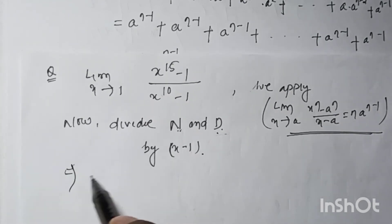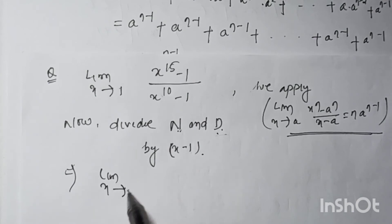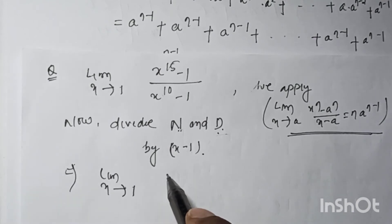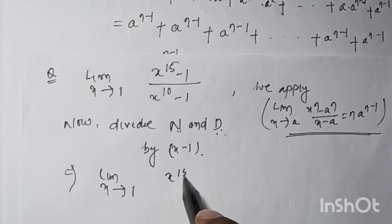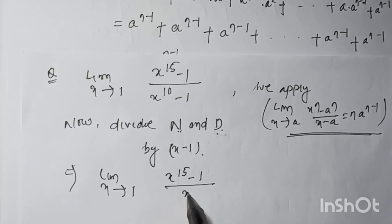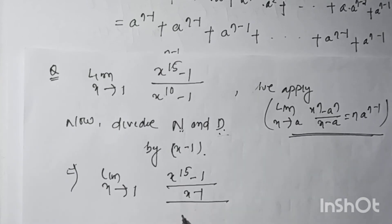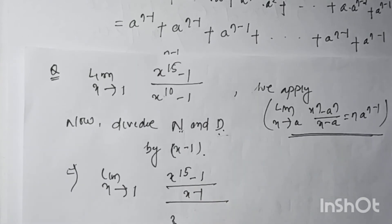We can write this as: limit x tends to 1 of [(x^15 - 1) / (x - 1)] divided by [(x^10 - 1) / (x - 1)], where a = 1.